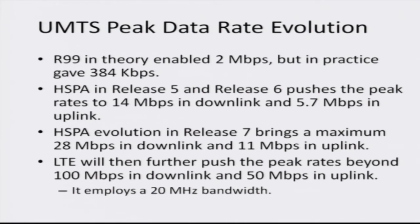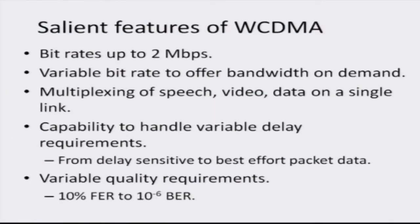The R99 initial release supports about 400 kilobits per second, while HSDPA and HSUPA support about 14 megabits per second in the downlink and 5 megabits per second in the uplink respectively. HSPA evolution or HSPA plus is capable of supporting about 28 to 30 megabits per second in the downlink and 11 megabits per second in the uplink. LTE, the ultimate evolution, supports about 100 megabits per second in the downlink and 50 megabits per second in the uplink, with a bandwidth of about 20 megahertz.